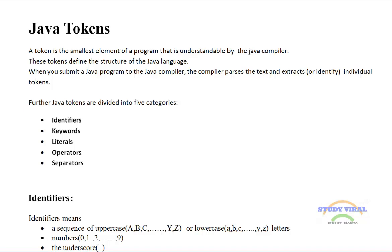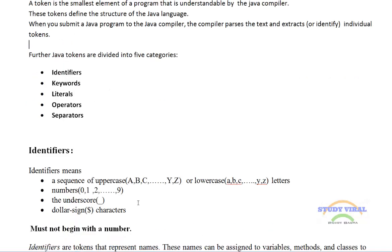Java tokens are divided into five parts. The first one is identifier, second is keyword, after that literal, operators, and separators. Let's see first about identifiers. An identifier is something which is identifiable to the compiler as well as to the programmer.